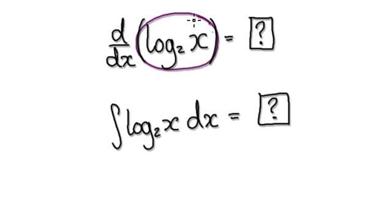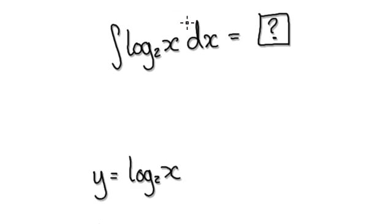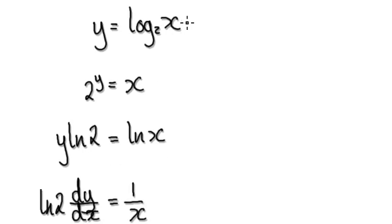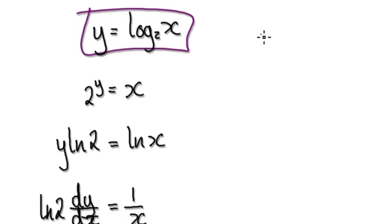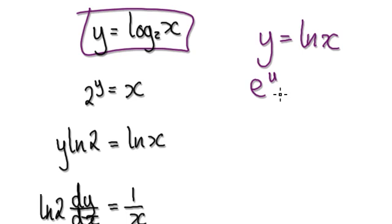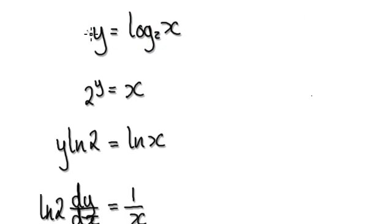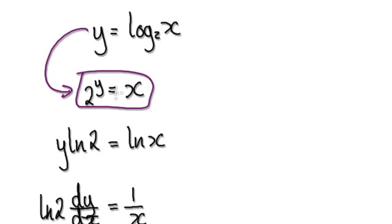So let's try and differentiate this first. Imagine this as y equals this. So if you have y equals the natural log of x, you can exponentiate both sides, like this — so this will become x here. Well, here's a base 2, so you can use the same technique to jump to here.